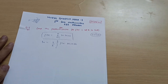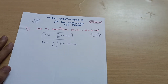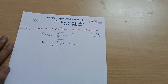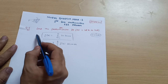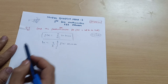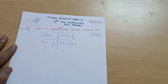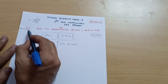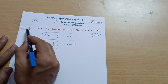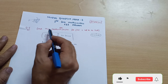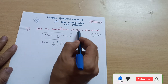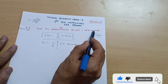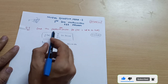Hello everyone and welcome back to my channel. We are discussing the model question paper for mathematics, Tripoli stream students. For previous problems, I have provided the link in the description box. Today we have model three, question number five: find the Fourier sine series for f(x) = cos(x) on the interval 0 to π.